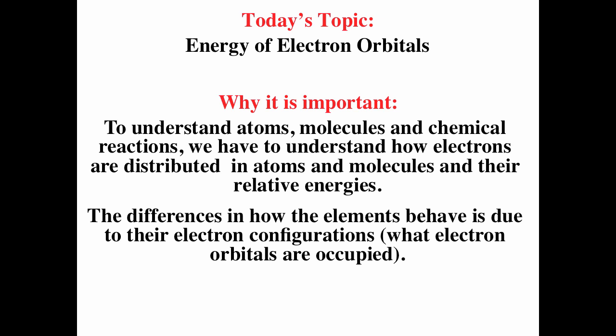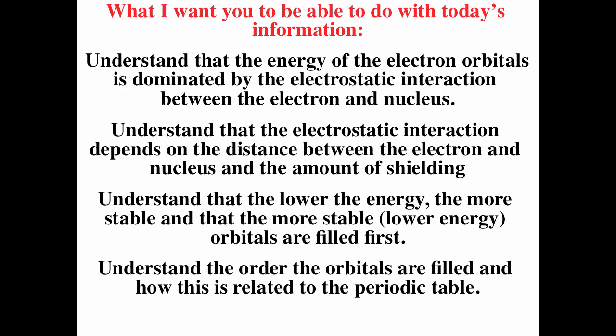The difference in how elements behave is due to their electron configuration — which electron orbitals are actually occupied. After watching this video, you should understand that the energy of electron orbitals is dominated by the electrostatic interaction between the electron and the nucleus, that it depends on distance and shielding, that lower energy means more stable, that more stable orbitals are filled first, and the order orbitals are filled relates to the periodic table. Using the periodic table, you can easily determine the electron configuration of atoms.